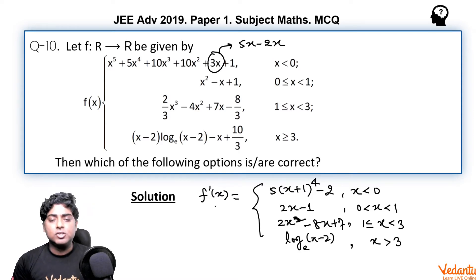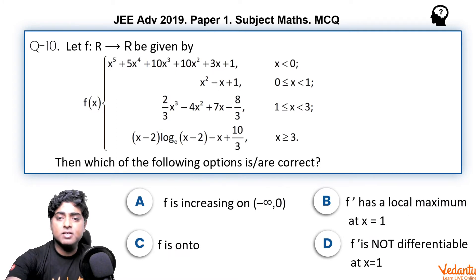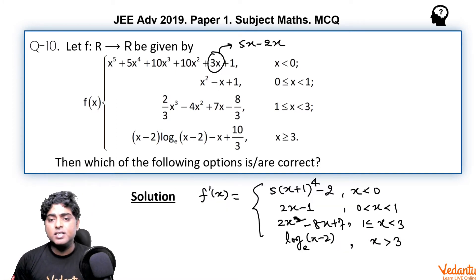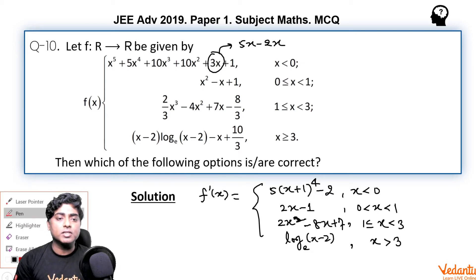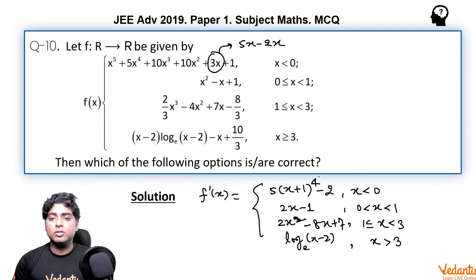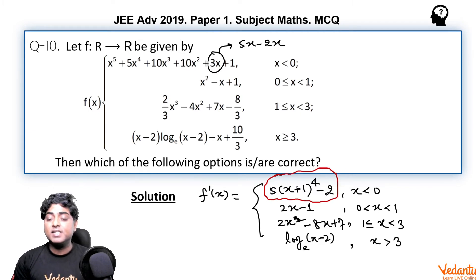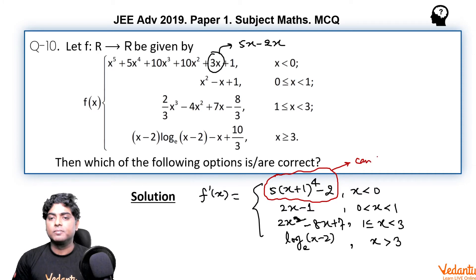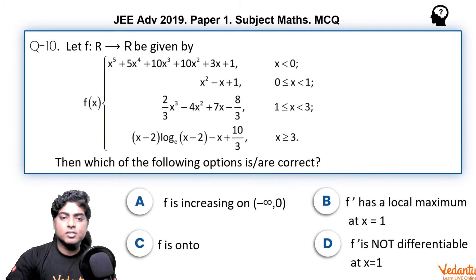Coming to Option A: is f increasing on (−∞, 0)? In the first interval, f'(x) = 5(x+1)⁴ − 2, which is not always positive. f' can change sign on (−∞, 0), so f is not always increasing there. Therefore Option A is not correct.